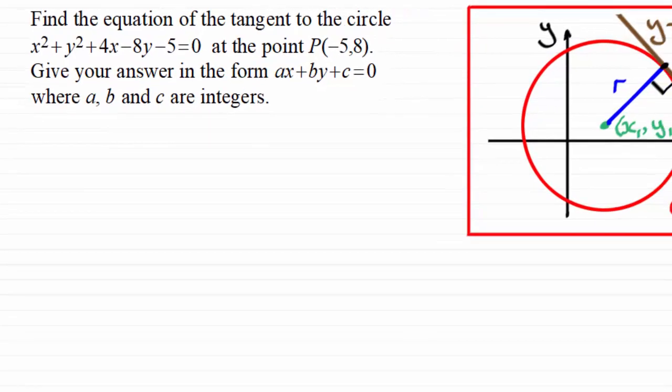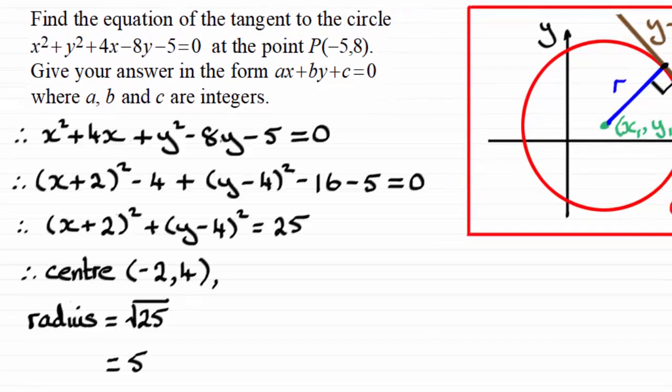OK, so if you were to work that out, you should have established that the centre was at minus 2, 4 and the radius was 5. What I did here, just briefly, was rearrange the terms in our equation so that we put the x's together and the y's together and then I've got the constant minus 5 there, equaling 0. I completed the square over x squared plus 4x. This gave me x plus 2, all squared minus 4. And I completed the square over those two terms, y squared minus 8y, to give me y minus 4, all squared minus 16.